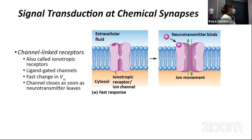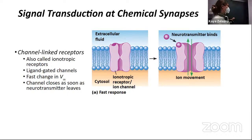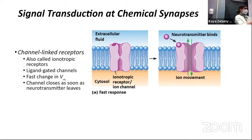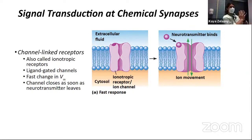Some synapses have fast reactions in the post-synaptic cell; some have slower reactions. Both of these are still chemical synapses — we're still thinking neurotransmitter crossing the synaptic cleft. Electrical synapses, which are gap junctions, are separate from all of this. So these are two types of chemical synapses we're thinking about now.